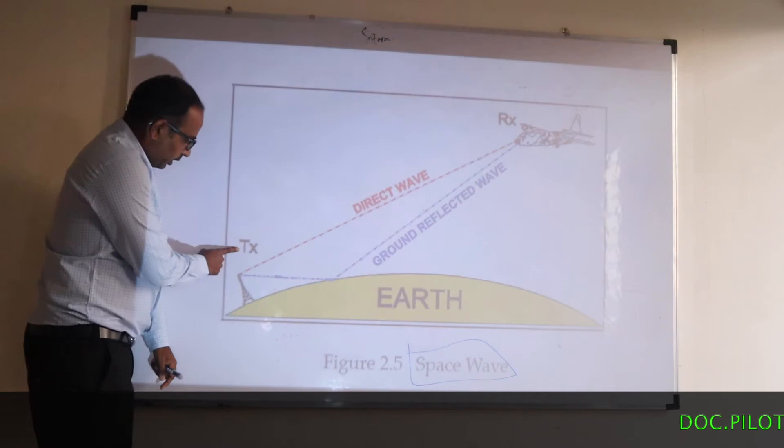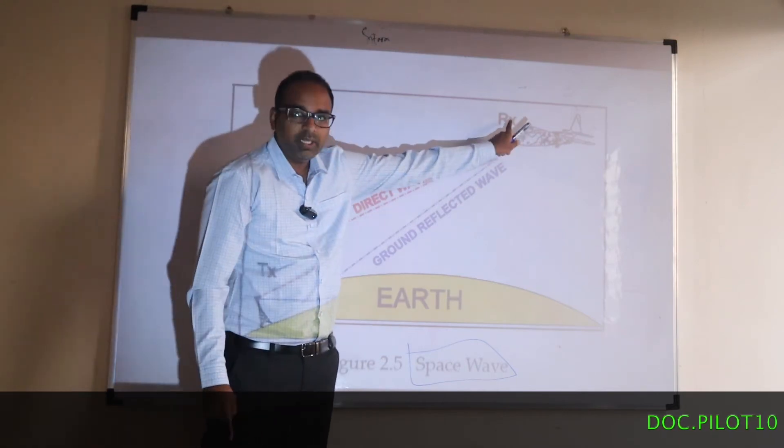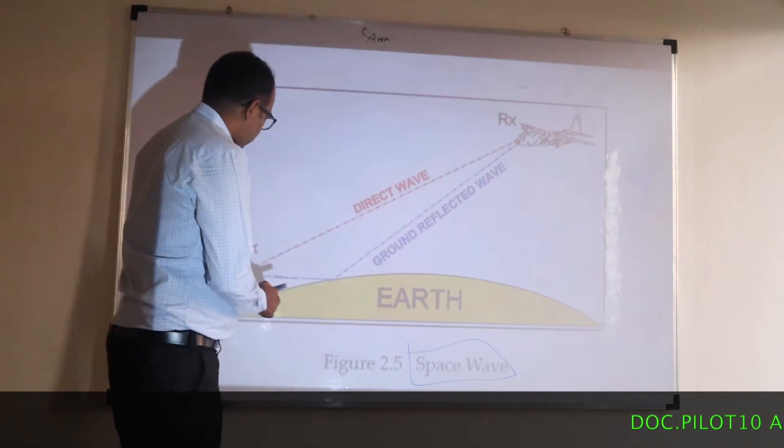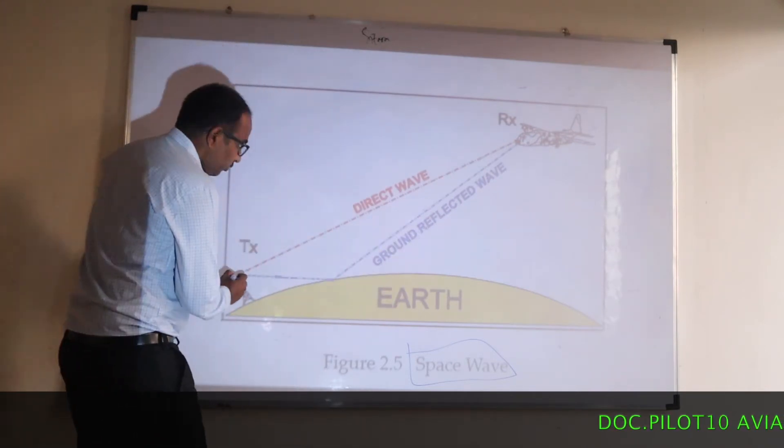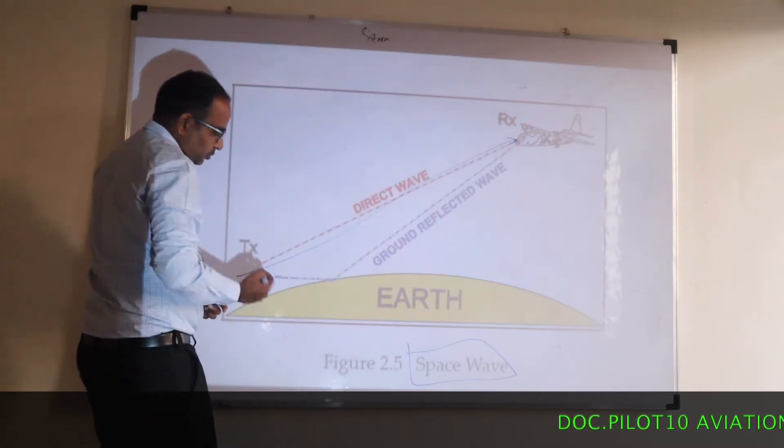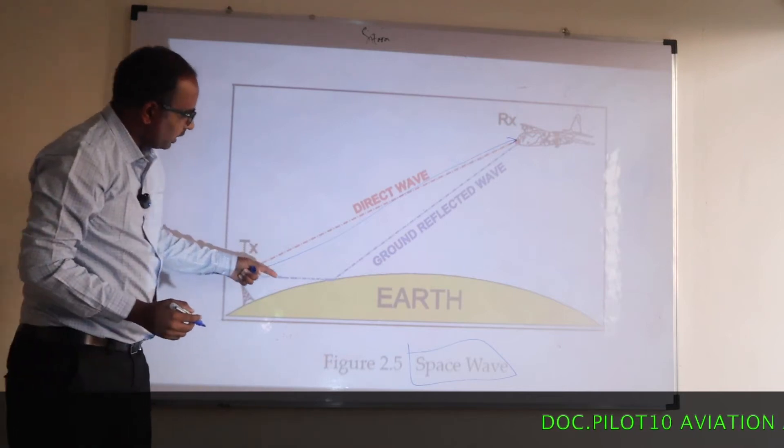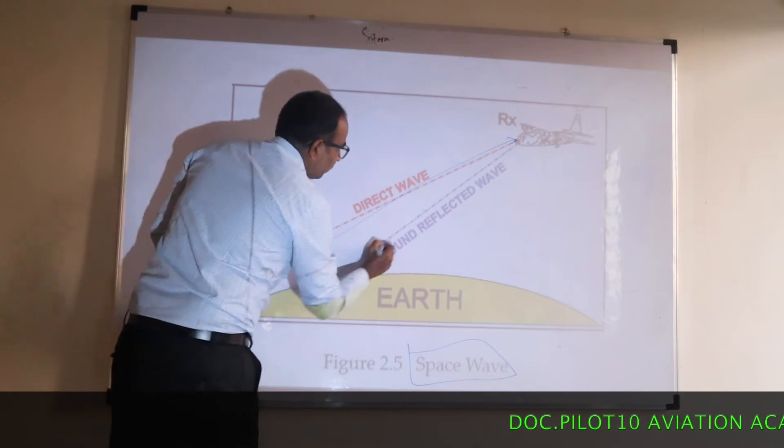Then the same transmitter was on the ground and the receiver was in the aircraft. And two types of waves were sent to the aircraft. One was a direct wave. It used to directly travel to the aircraft. The other they observed was, these direct waves sometimes get reflected from the ground also. So it is called as ground reflected wave.